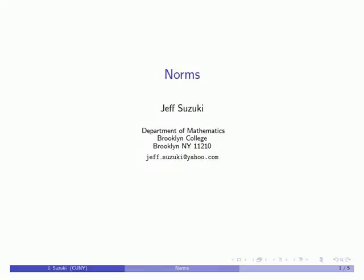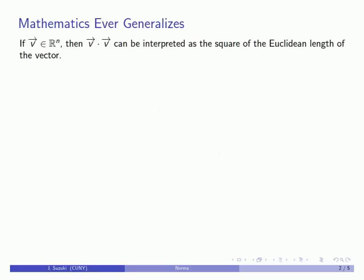One of the key activities of mathematics is generalizing basic concepts. If I take some vector in Rn, the dot product of that vector with itself can be interpreted as the square of the Euclidean length of the vector. The norm is a generalization of this concept.